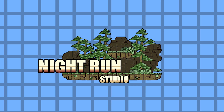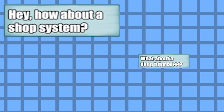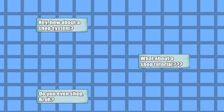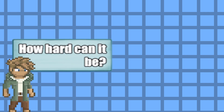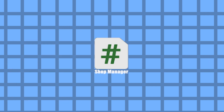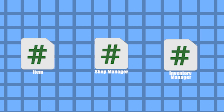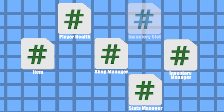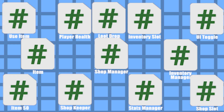For a while now, people have been asking me about a shop system tutorial. While shops aren't all that complicated, what makes them difficult is that they have to interact with so many other systems. They have to communicate with individual items, your inventory manager, your player's health system, and your character's stats manager. This can be hard to account for in a single tutorial.